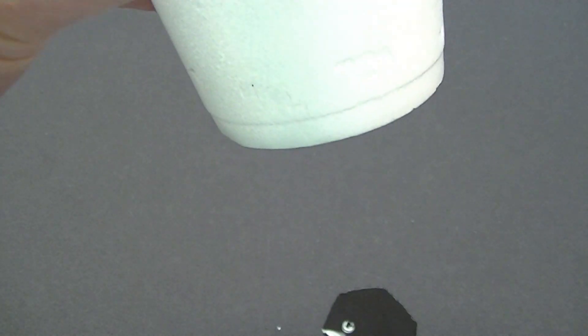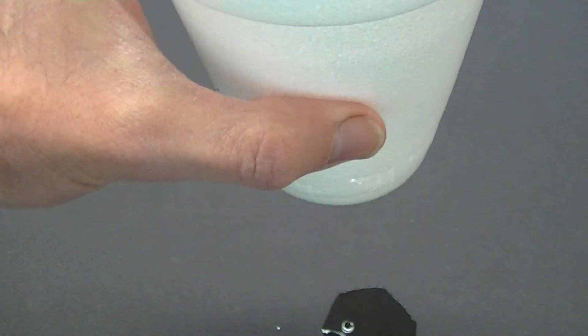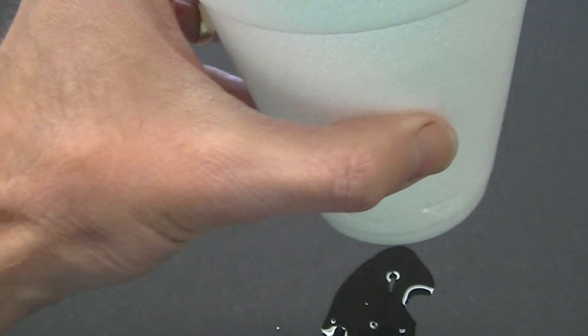The gel doesn't form immediately, so a little bit of water often leaks out of the hole in the bottom. That's why I mentioned that the cup is leaky.